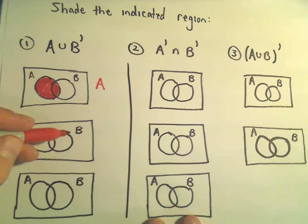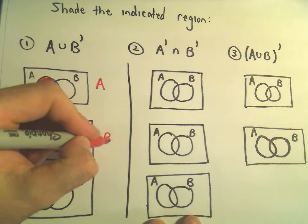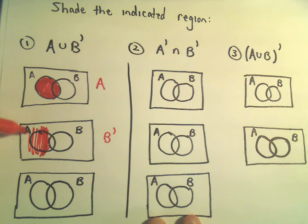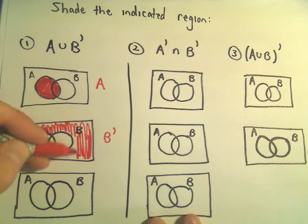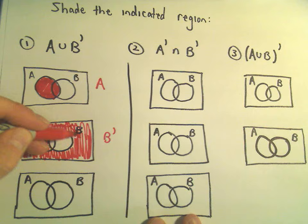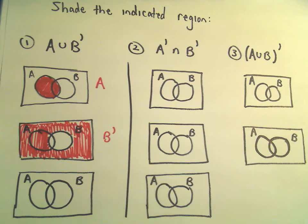NOT B would be everything outside of circle B. So I'm going to do NOT B next. Well, NOT B would be everything outside of circle B. So everything outside of circle B. Alright, good enough.